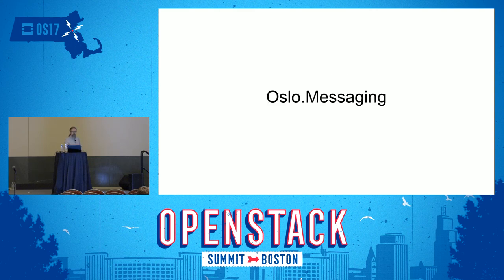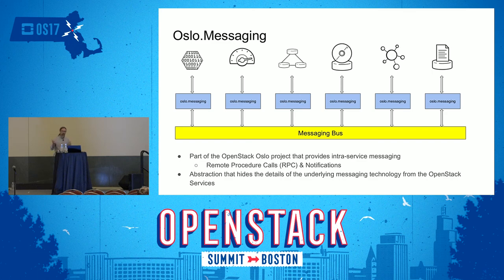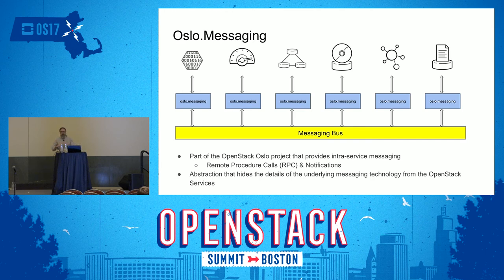So, Oslo Messaging. When you see stuff go through Rabbit, it's via Oslo Messaging. The Oslo project is a collection of utilities shared amongst the projects of OpenStack — libraries to do different things so we don't keep reinventing the wheel. Oslo Messaging provides high-level abstractions for two very common messaging patterns: one being remote procedure call, and another we call notifications. The projects aren't speaking directly to Rabbit via Rabbit APIs; they are speaking to Rabbit via Oslo Messaging at a high level.